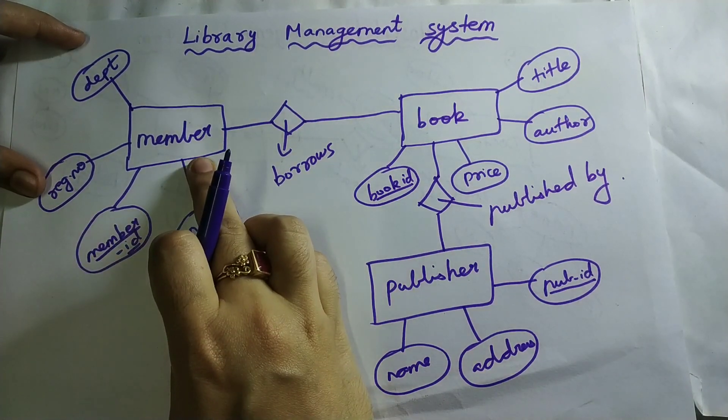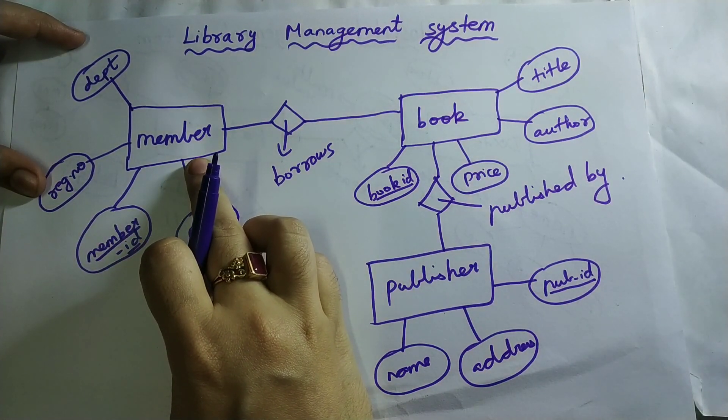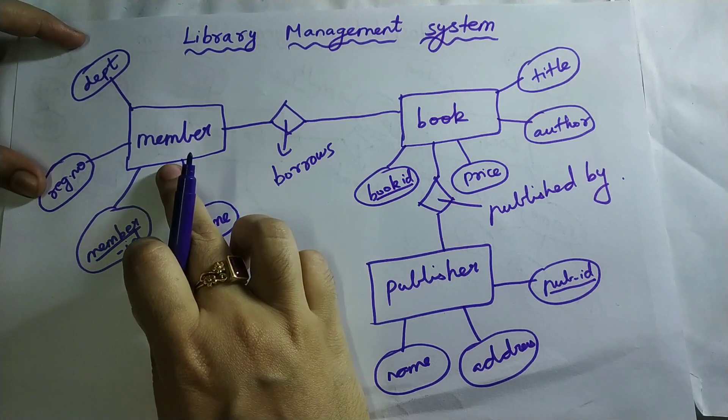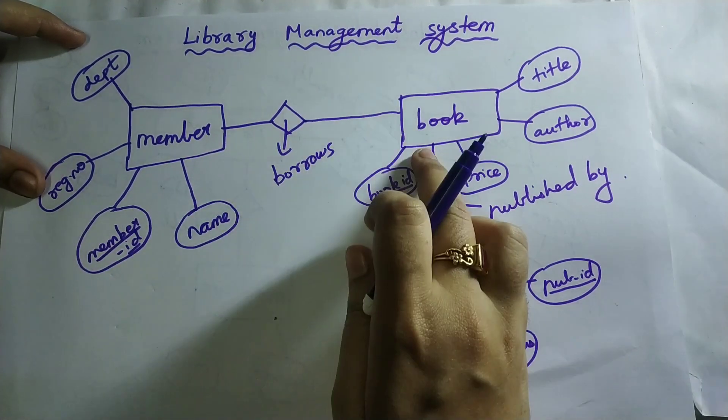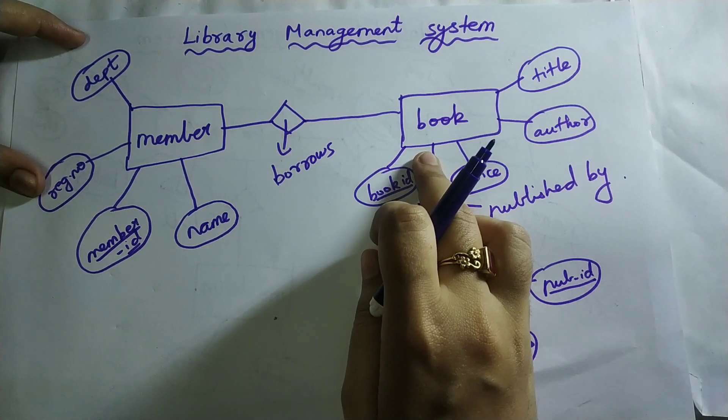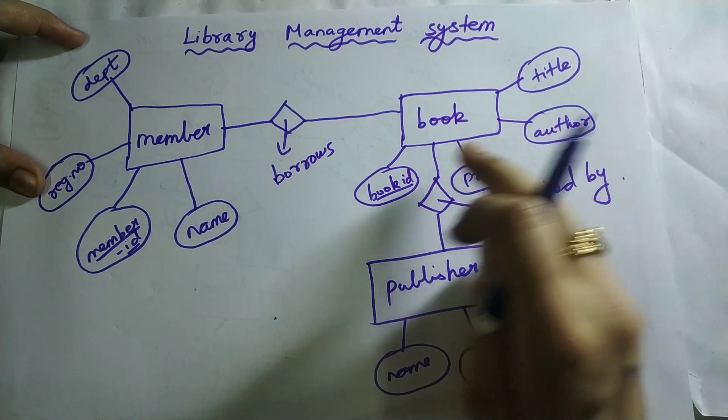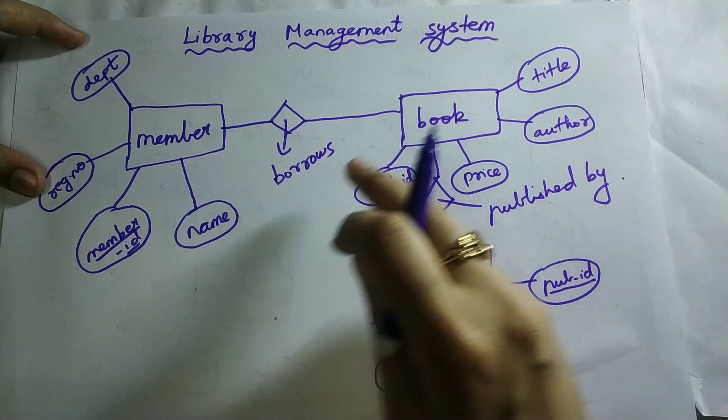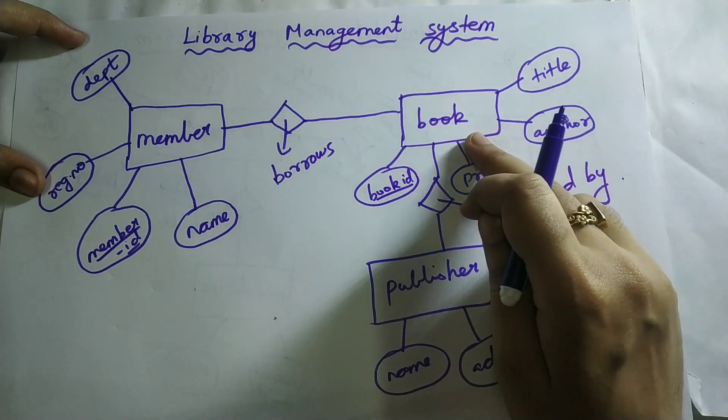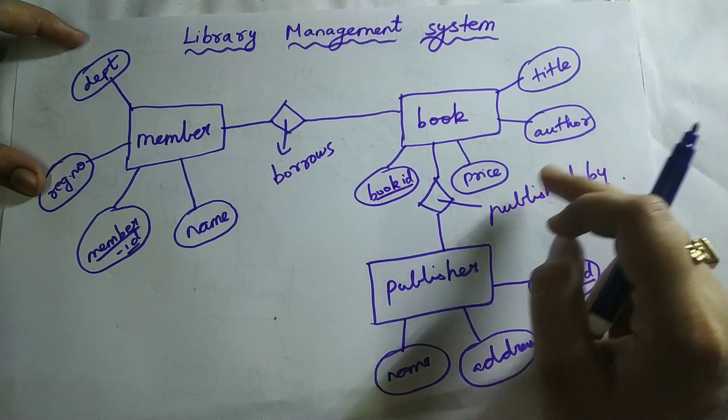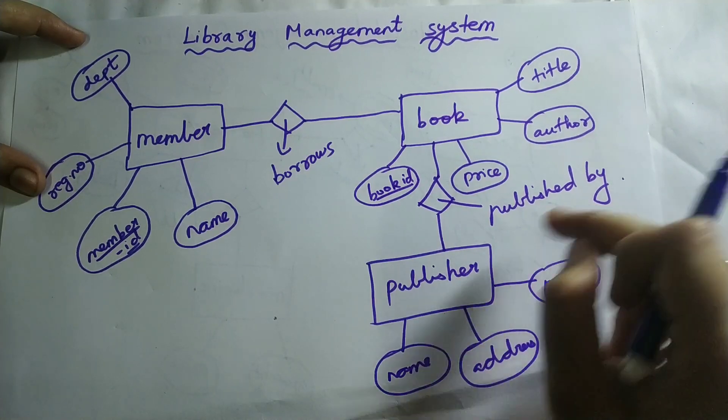After becoming the member of that library, for example, if I have become the member of some library, I will go to that library and borrow some book which is needed for me. And that book, if it is wanted by many members, then many copies should be made. That will be made only by the publisher. So that book will be published by the publisher.